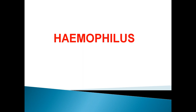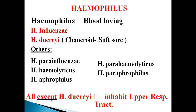Good morning students, today's topic is Haemophilus. Haemophilus organisms are small, non-motile, non-spore-forming bacteria. As their name suggests, 'hemo' means blood and 'philus' means loving, so these bacteria are blood-loving — they require blood for their growth, or you can say they are parasitic.